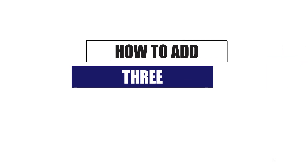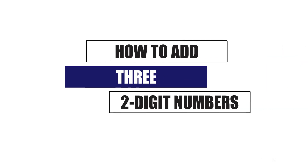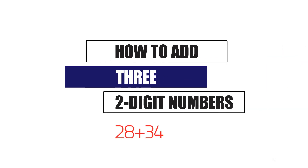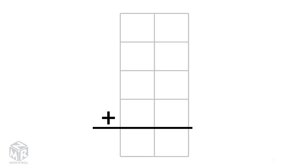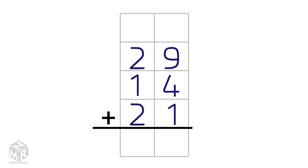How to add three two-digit numbers. Let's try an example: 29 plus 14 plus 21.